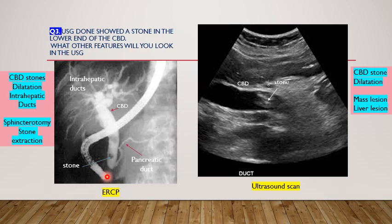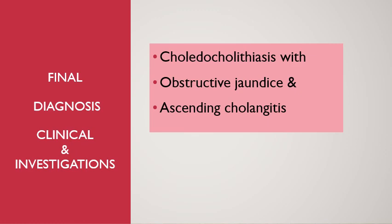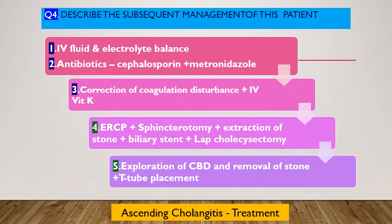This is an ERCP film — since we have a stone and the duct is dilated, ERCP will be the next line of investigation for this patient. We will proceed with ERCP, which is quite urgent for a patient who has an obstructed biliary duct with a stone. We demonstrate the stone and also perform a sphincterotomy and extraction of the stones if the patient is fit enough to be done at the same sitting. After these investigations — ultrasound and CT scan, together with the clinical picture — we come to the final diagnosis of choledocholithiasis with obstructive jaundice and ascending cholangitis.